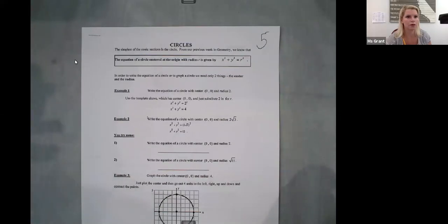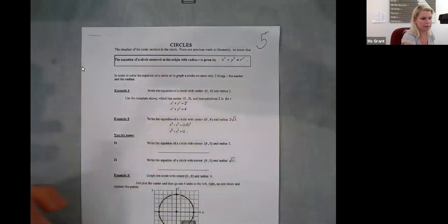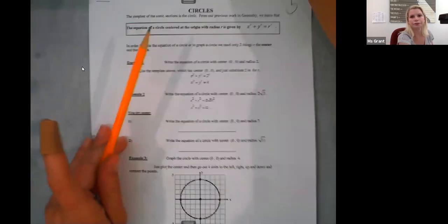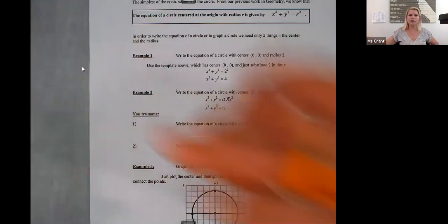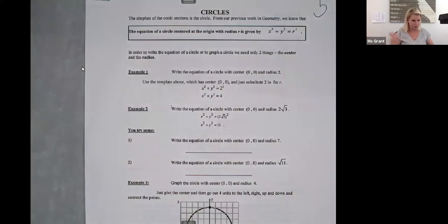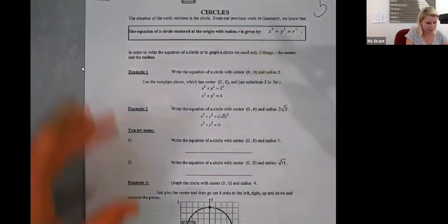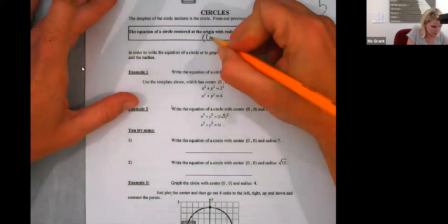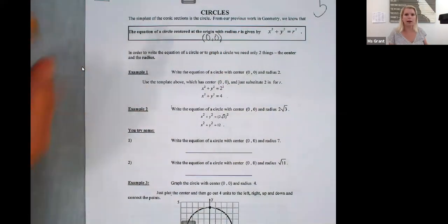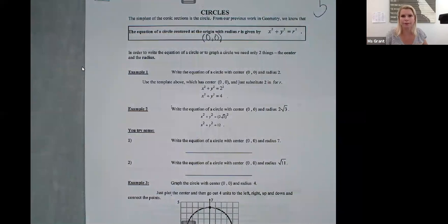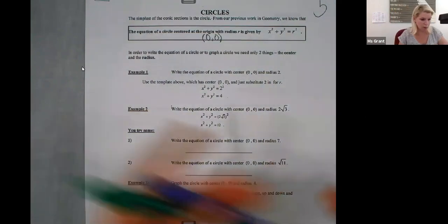Let me zoom in. So circles. The formula of a circle, the equation of a circle with the center at the origin, zero comma zero. The radius is, we don't know, just r. It's x squared plus y squared equals r squared. So whatever the radius is, I have to actually square it.